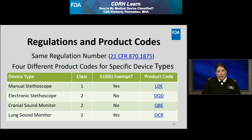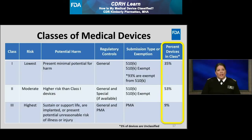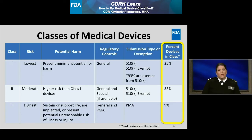Determining the appropriate product code will help you determine the extent of regulatory requirements for your device. The last column of the Classes of Medical Devices table provides insight into the percentage of devices in each class. Out of all regulated medical devices, roughly 35% are Class 1, 53% are Class 2, and 9% are Class 3. Roughly 3% of devices are unclassified — a device which was in commercial distribution prior to the Medical Device Amendments of 1976 and has not yet been classified into Class 1, 2, or 3.